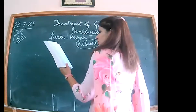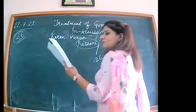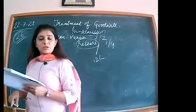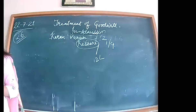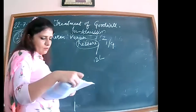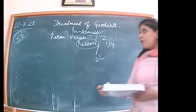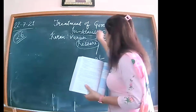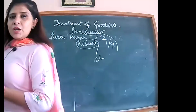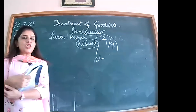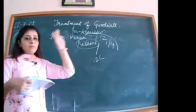Kishore is being admitted for a 1/4 share. Kishore brings 2 lakh for his capital, which is to be kept fixed. Kishore requires his share of profit from Varun only — meaning only Varun is sacrificing. Karan is not sacrificing. So Kishore's 1/4 share is entirely taken from Varun's previous share.